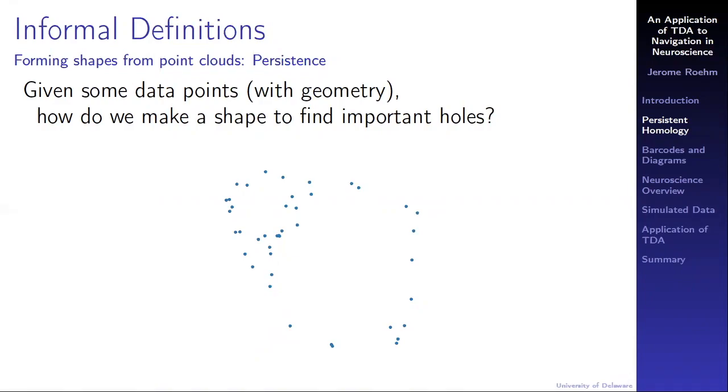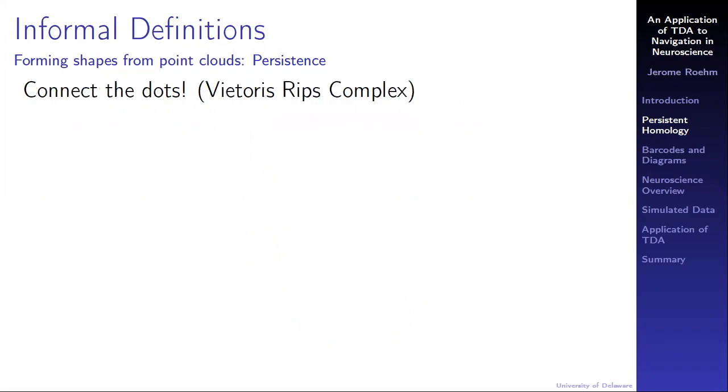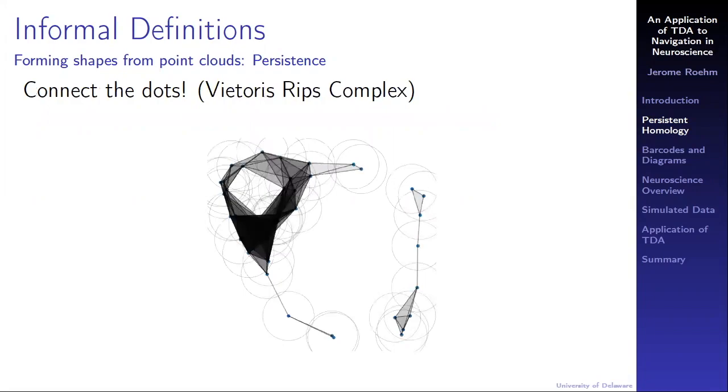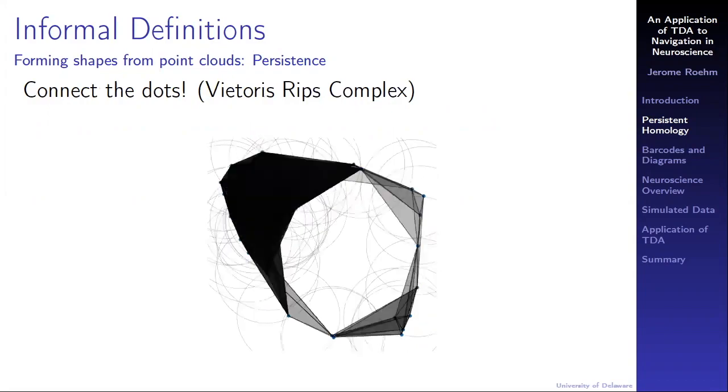However, most of the time, if we're trying to analyze data, the data does not come in the form of a completed shape. It comes as separate, discrete data points. So given some data points and an underlying geometry, how do we make a shape in order to find the important holes? That's where the idea of persistence is helpful. We would like to pick out the small hole in the upper left, as well as the large hole in the lower right. But how do we form a complete shape? Well, we do what our eyes naturally do and connect the dots. We can form what is called the Vietoris-Rips complex. If two points are close enough, we can connect them with a line. If any triangles are present, we fill them in to make a solid shape.